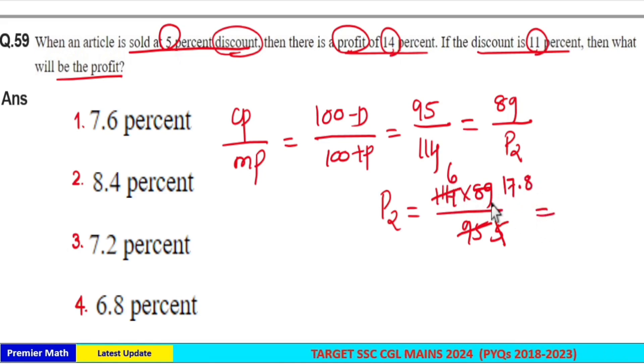17.8 into 6, which is equal to 60 plus 42 plus 4.8. 60 plus 42 is equal to 102. 102 plus 4.8 is equal to 106.8.